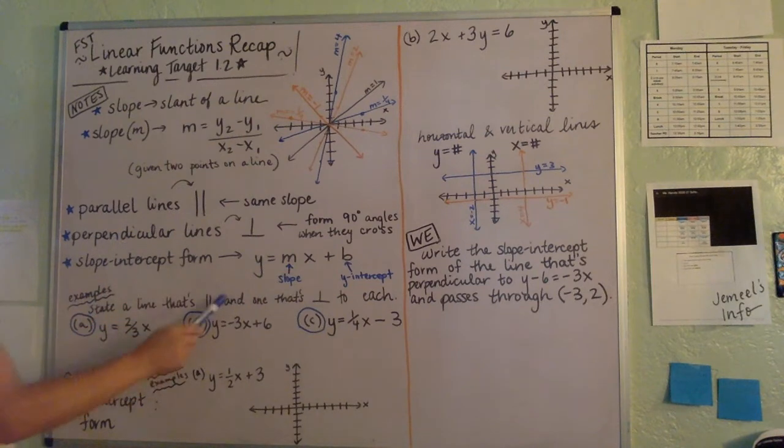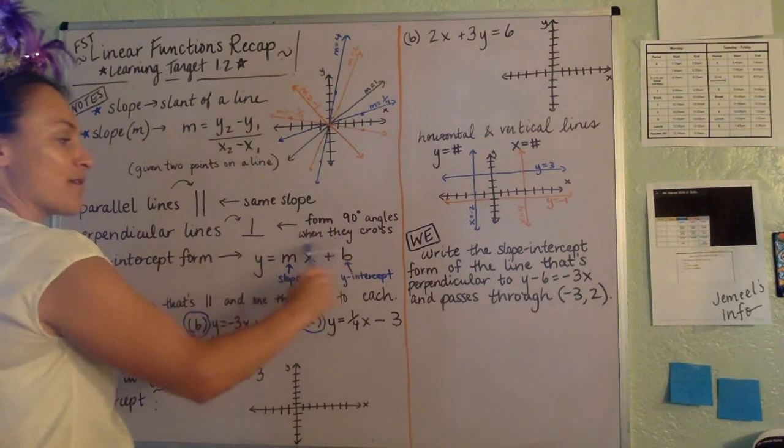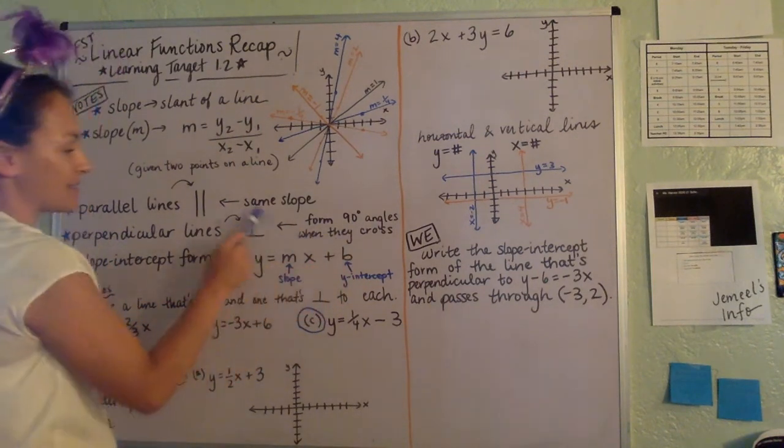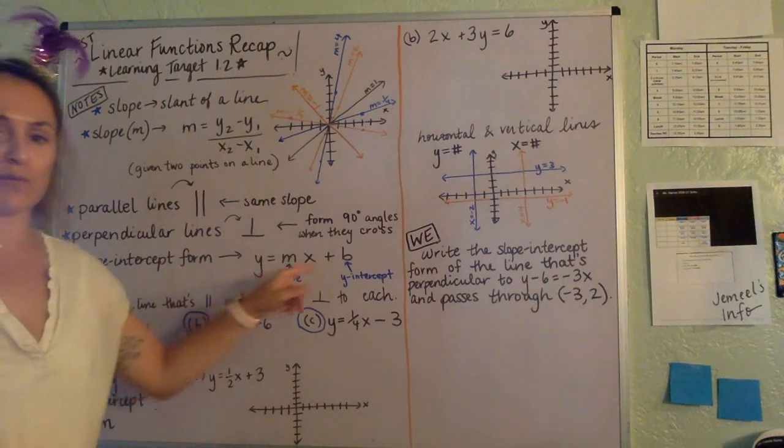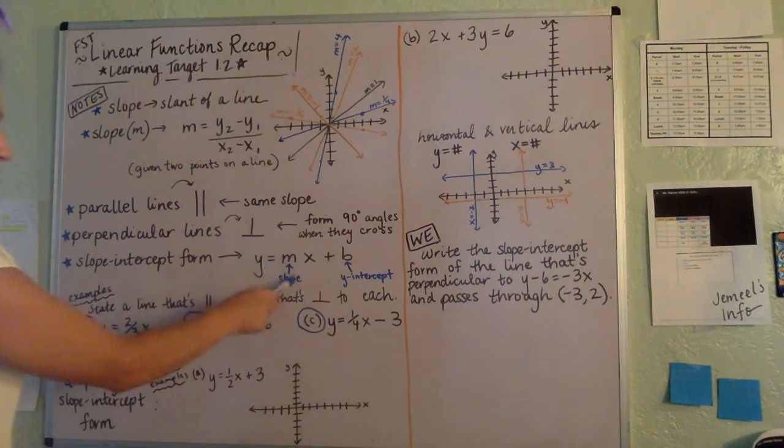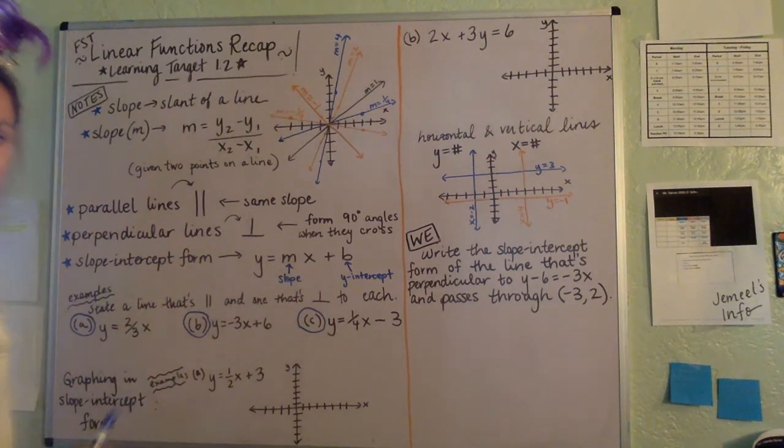We have perpendicular lines. When they cross each other, they form a 90-degree angle. And this is the symbol that we use, an upside-down capital T. We have slope-intercept form, Y equals MX plus B, where M is the slope and B is the Y-intercept.